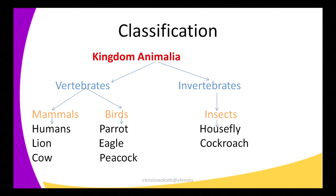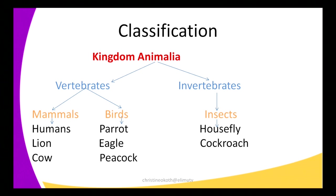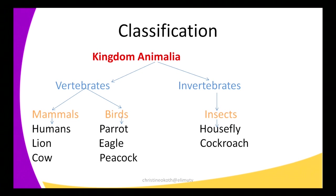There are others which are mammals. Some of the features that make these organisms mammals include: they have mammary glands, they feed their young ones, and they give birth to live young. Under mammals I'm going to have humans, lions, and cows. Then under the second group I'm going to have birds — the parrot, eagle, and peacock — grouped together because of shared structures and ways of life.